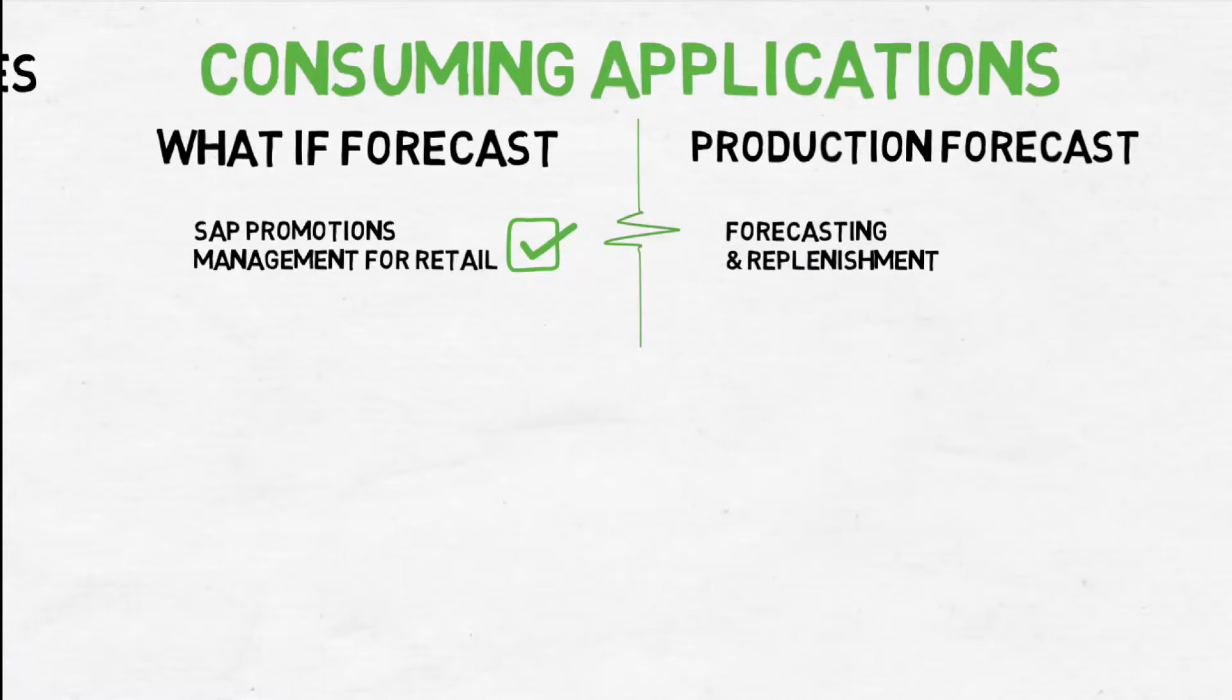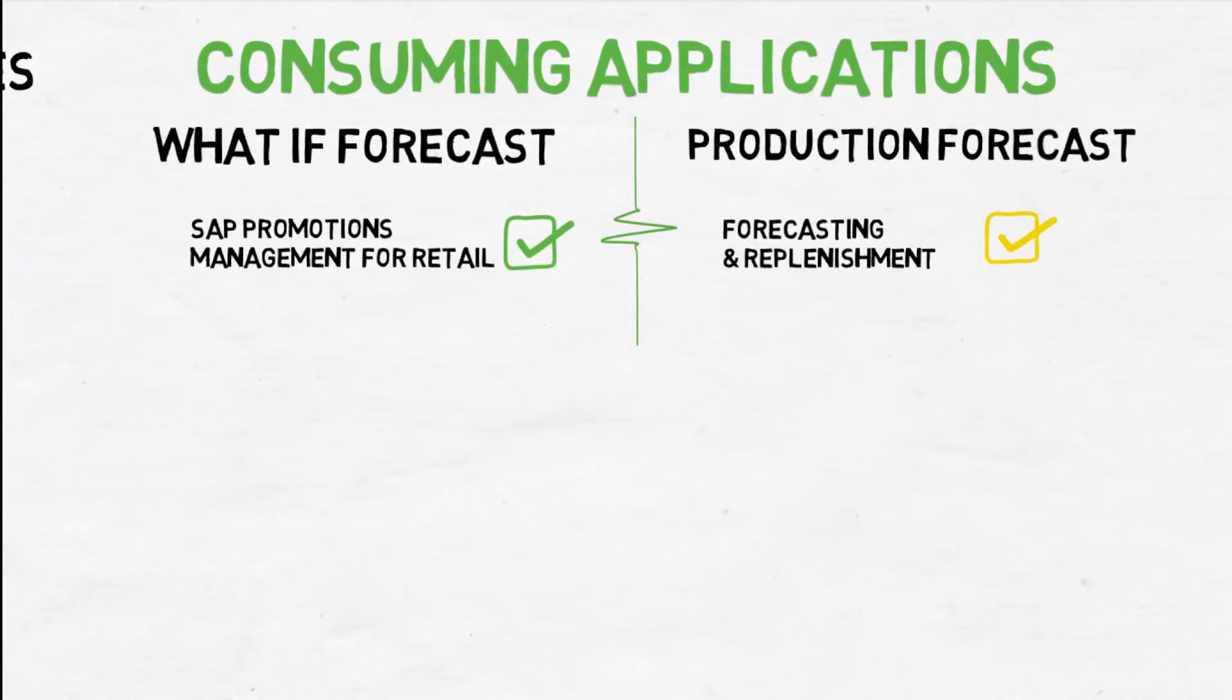FNR, or forecasting and replenishment, is an SAP solution that's been around for a long time, and has always had its own excellent forecasting logic, but will soon have the option to consume the persisted UDF production forecast.